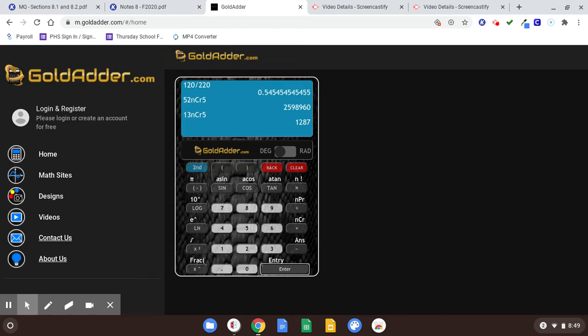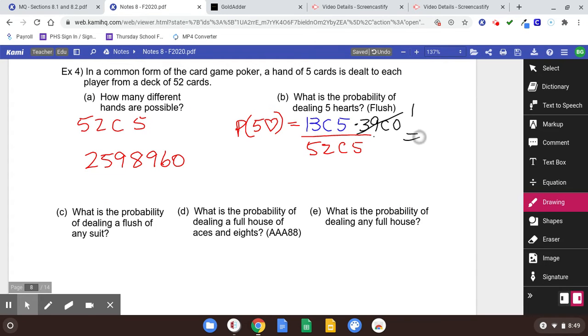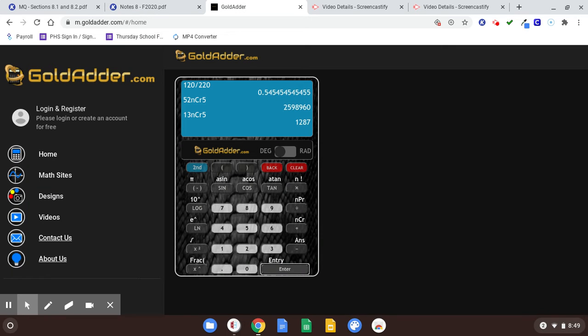We need 13 choose 5. That's 1287 over 2,598,960. So here, I don't think four decimals is quite descriptive enough. So I would go past four decimals. 0.000495.